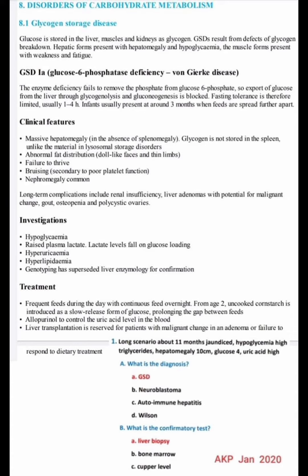Key clinical features of glycogen storage disease include massive hepatomegaly in the absence of splenomegaly — glycogen is not stored in the spleen, unlike the material in lysosomal storage disorders. There is also abnormal fat distribution, doll-like faces and thin limbs, failure to thrive, bruising secondary to poor platelet function, and nephromegaly.